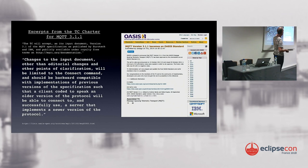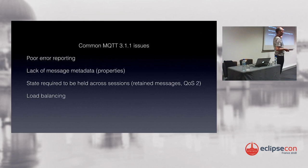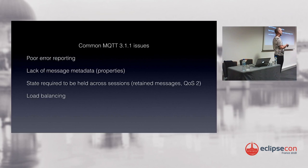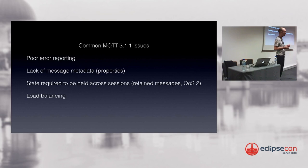The only changes we could make were to the connect command. Everything else had to stay the same, which meant there were several long-outstanding issues we could have fixed in MQTT 3.1.1 but didn't. The biggest omission is error reporting — there was no way of sending a negative acknowledgement to a publish request. There were no properties on messages, and no way of load balancing. Several concerns for cloud implementations weren't fixed in 3.1.1.